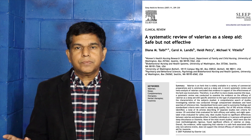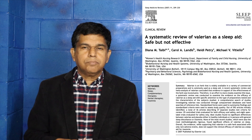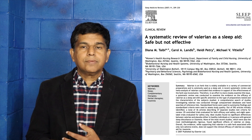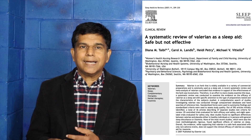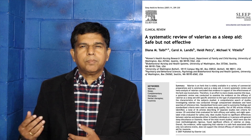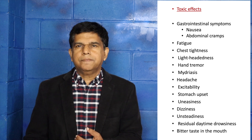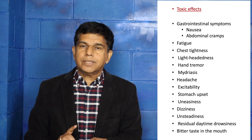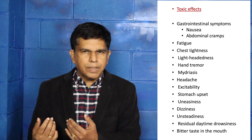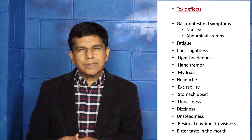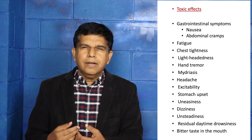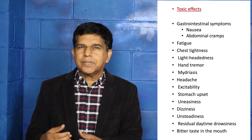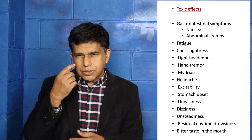We do an extensive literature search based on research. The first study we looked at is a meta-analysis and systematic review on valerian root, published by Diana TB in the journal Sleep Medicine. The main symptoms reported were gastrointestinal symptoms like nausea, vomiting, abdominal cramps, and abdominal pain. Patients also reported fatigue, chest tightness, dizziness, metallic taste in the mouth, daytime drowsiness, mydriasis — pupillary changes — and tremors of the hand.